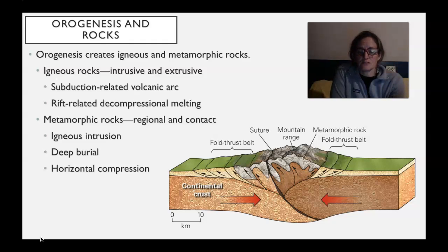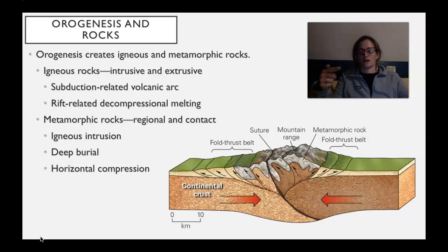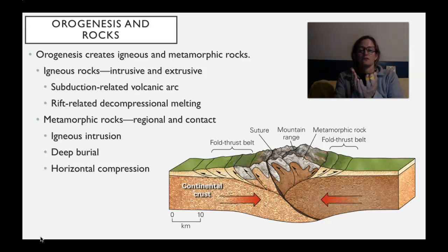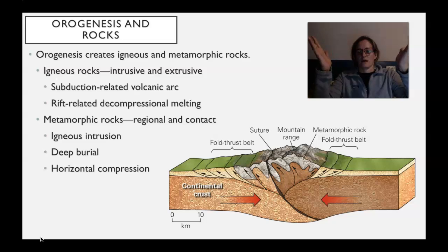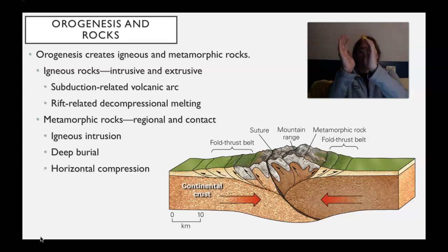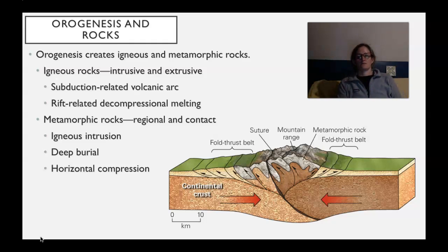In this image there's compression — continental crust coming in and causing thrust faults on either side. This is a pop-up structure: two folded thrust belts and then the big mountains popping up in between.